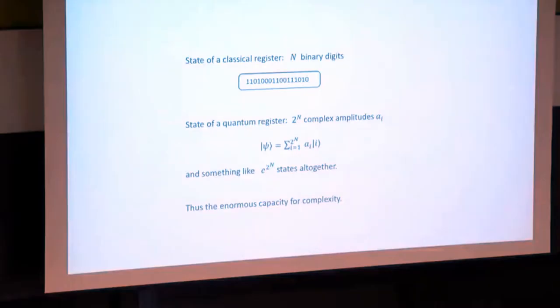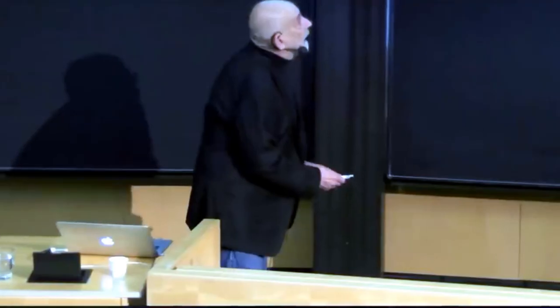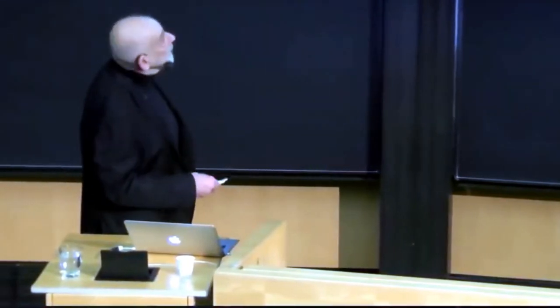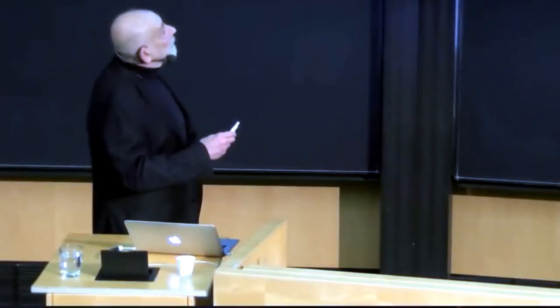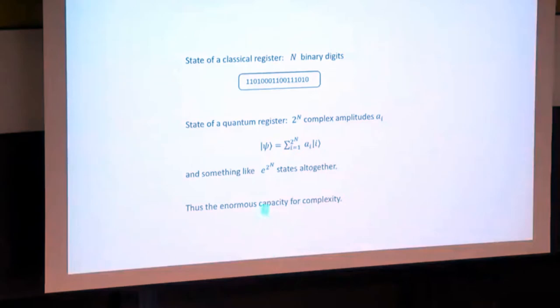It's a superposition, a quantum mechanical superposition, and it requires 2 to the n complex coefficients here to describe that quantum mechanical state. So, whereas this took n binary digits, to describe the corresponding quantum mechanical state requires 2 to the n complex coefficients.